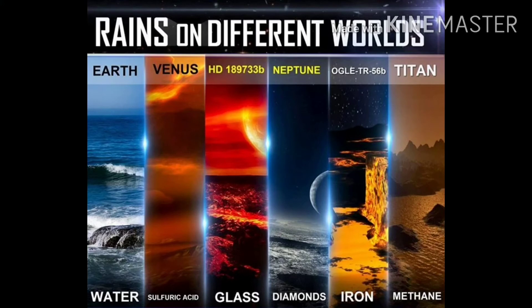Now, considering different planets in our solar system, let's look at different types of rain as an example. On Earth it rains water; on Titan, which is the moon of Jupiter, it rains methane. Different planets have different atmospheres, atmospheric pressure, rain types, oxygen levels, and heat. It is very cold on Jupiter and Saturn, while it is very hot on Mercury. Right now we will focus on what type of climate our planet Earth has.